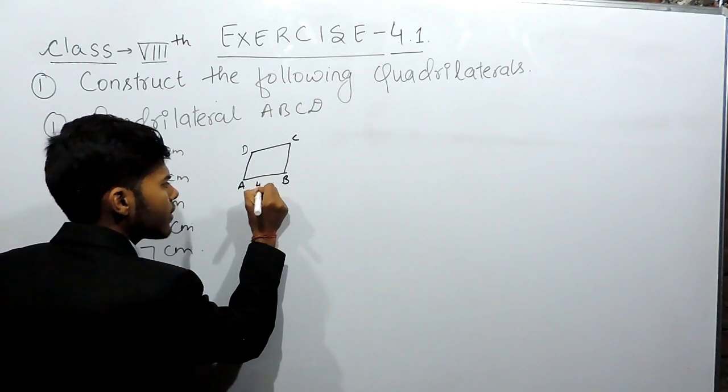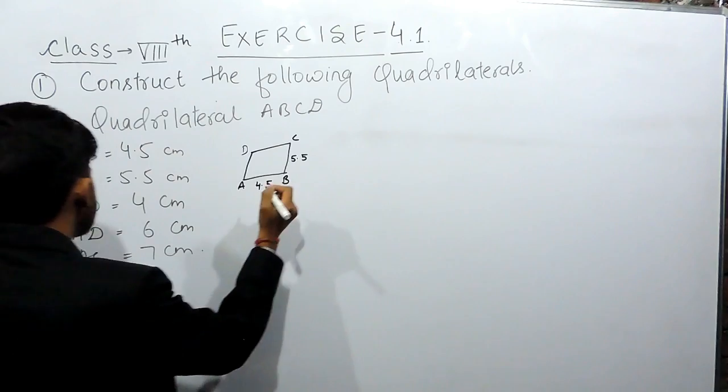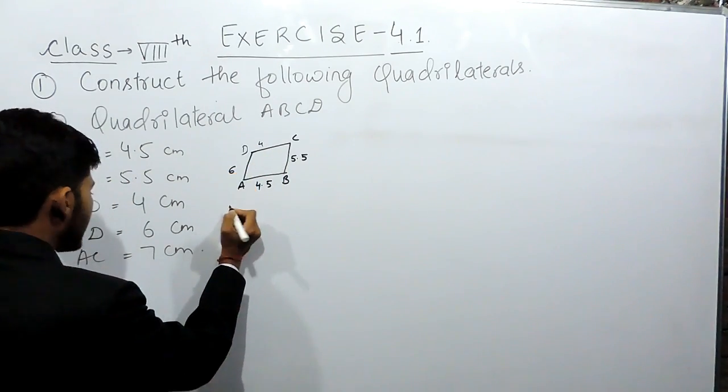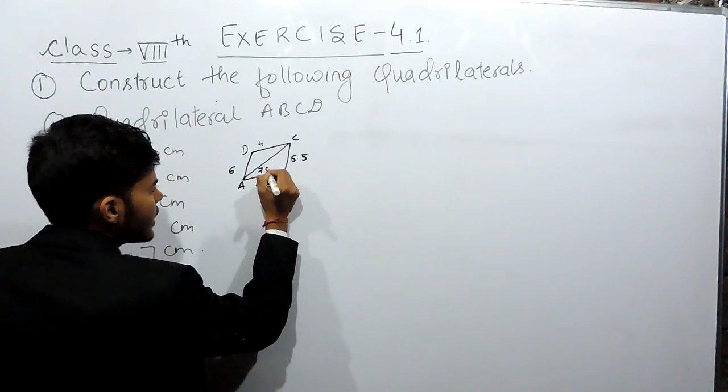Now, AB is 4.5 cm, BC is 5.5 cm, CD is 4 cm, AD is 6 cm and AC means the diagonal is of 7 cm.